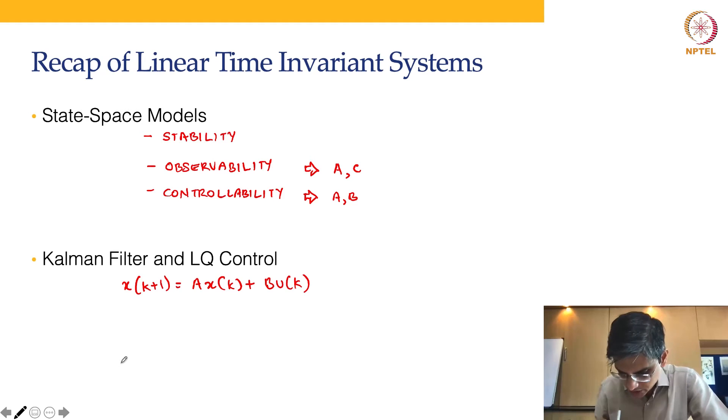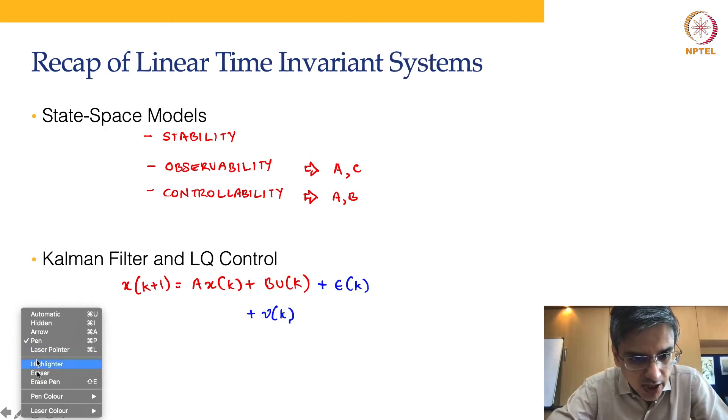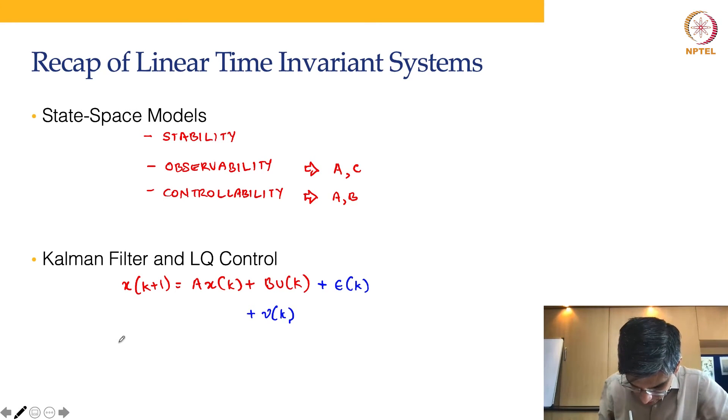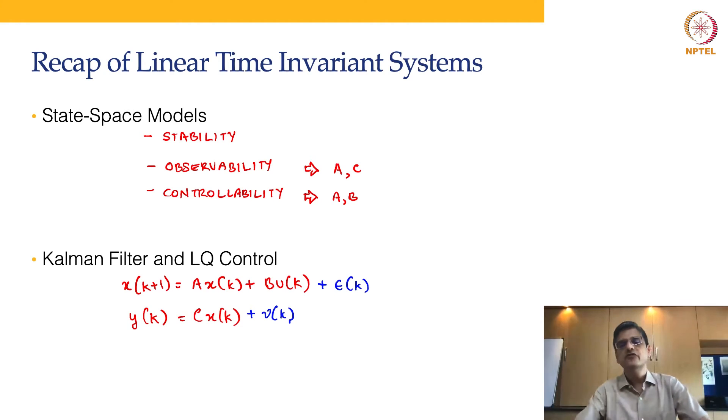When it comes to Kalman filter, we said there are going to be some errors in the overall system. Let's say the errors in the overall system are of additive type. Epsilon is state noise and nu is output noise or measurement noise. If that's the case, then Kalman filter spoke about whether from the measurements we can calculate what the initial state was or correct the estimates of the states.